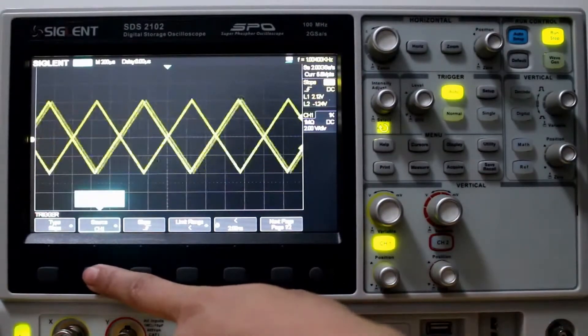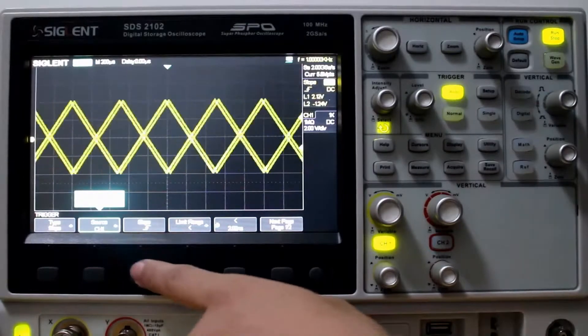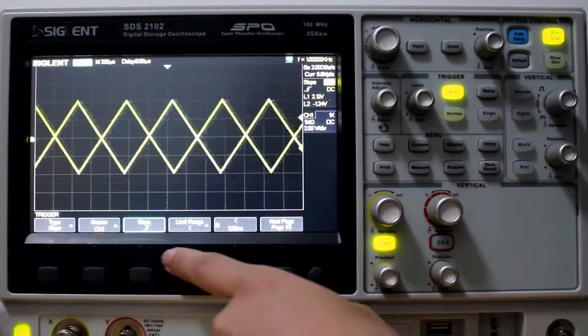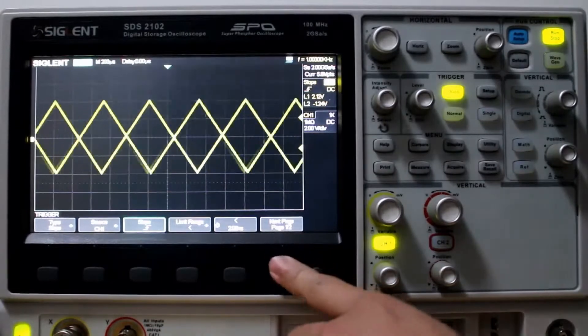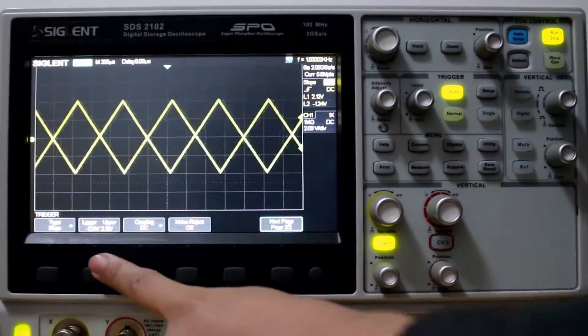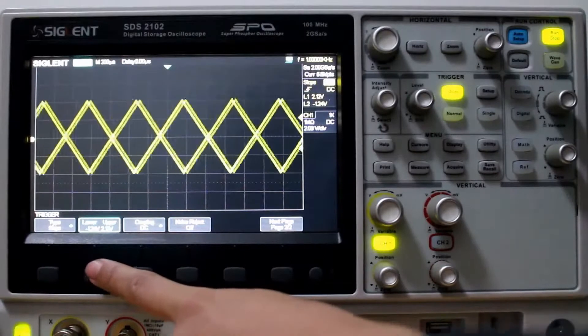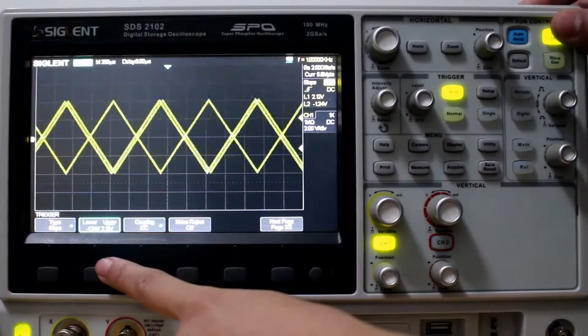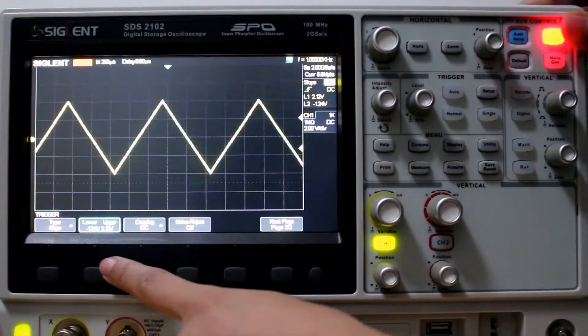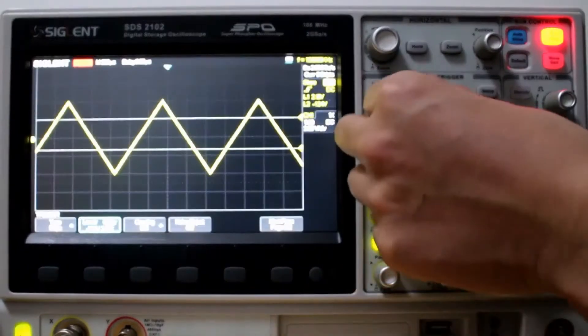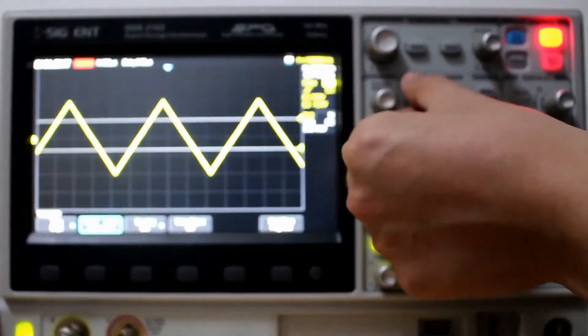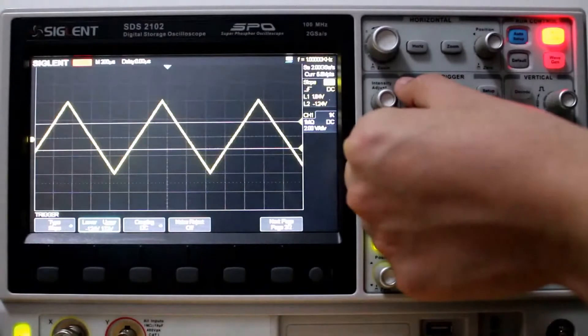Now we're looking at the Slope trigger type. Channel 1. Good. Rising. Let's go to Page 2. And we can see we can set, with a Slope trigger type, we can set the upper and the lower range. So we're at 2.12 volts for the upper. And the lower, let's adjust the upper, I guess.